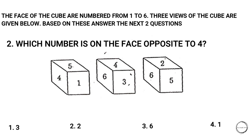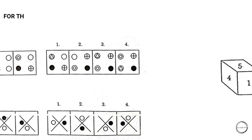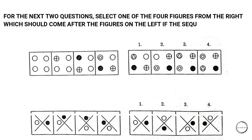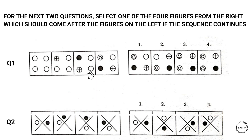Next question: which number is on the face opposite to four? The answer is two. Moving on: for the next two questions, select one of the four figures from the right which should come after the figures on the left as the sequence continues. You can see the empty circle vanishing in the sequence — the answer is option three. In the second question, the answer is four because this is the only option not repeated in the question.